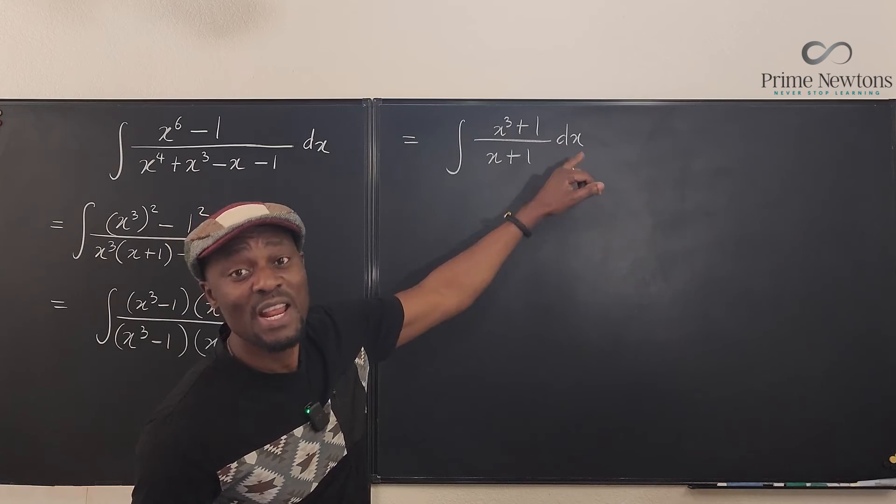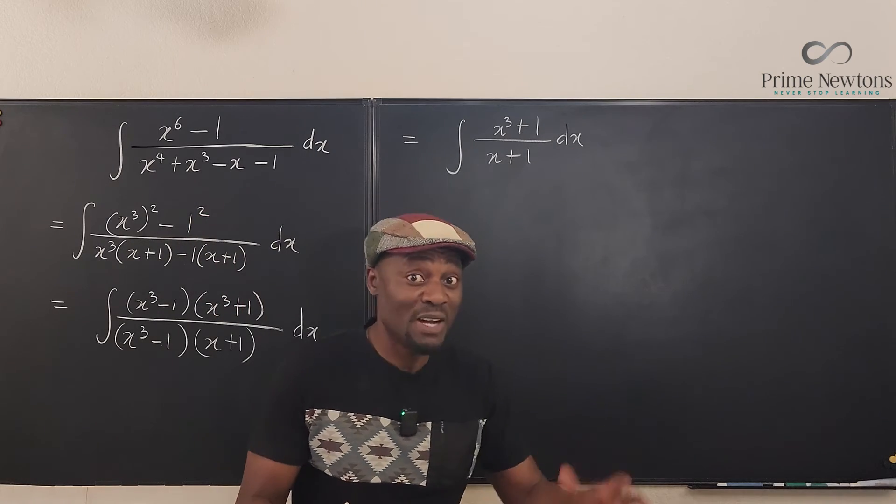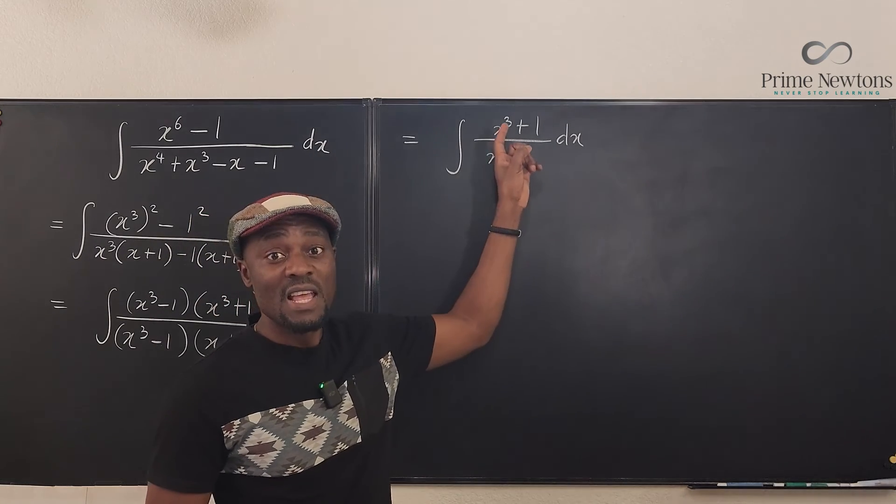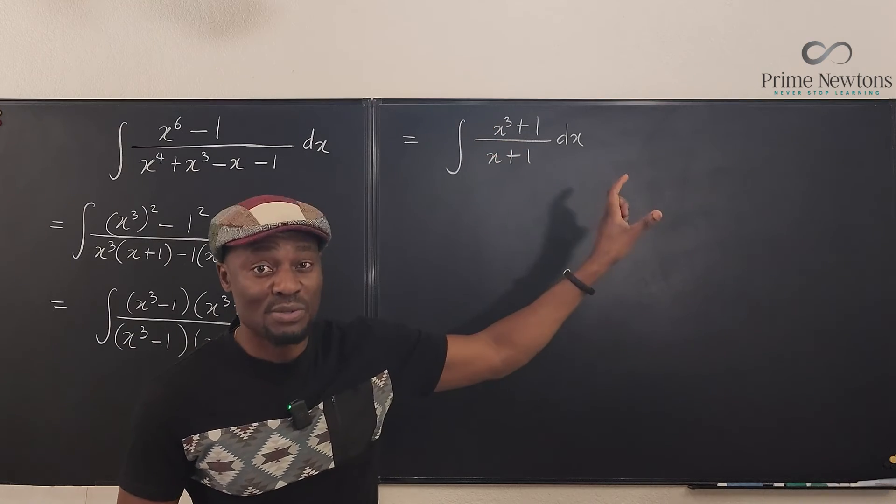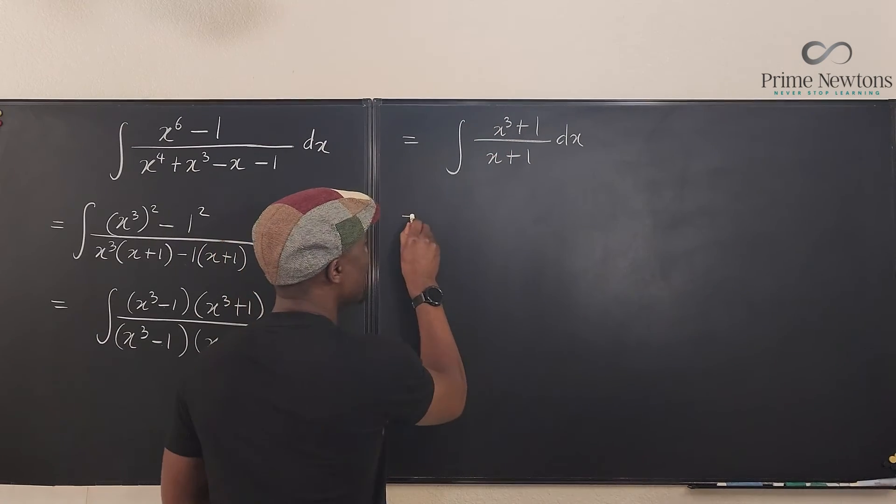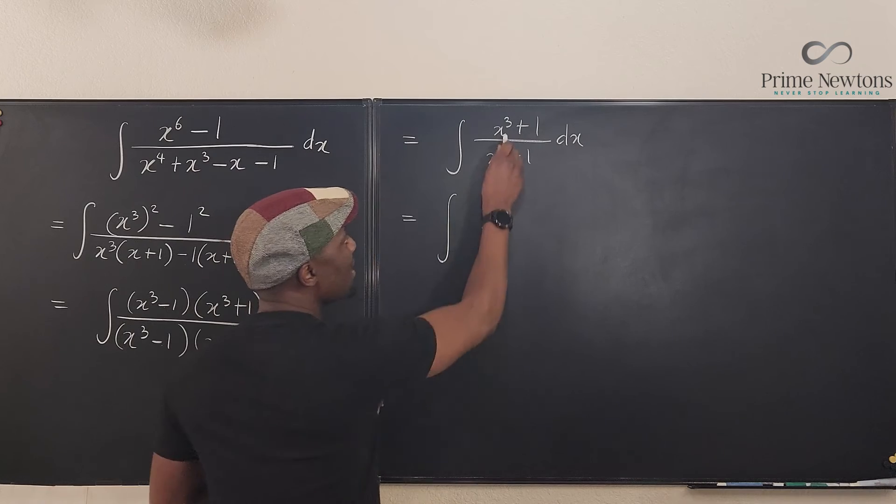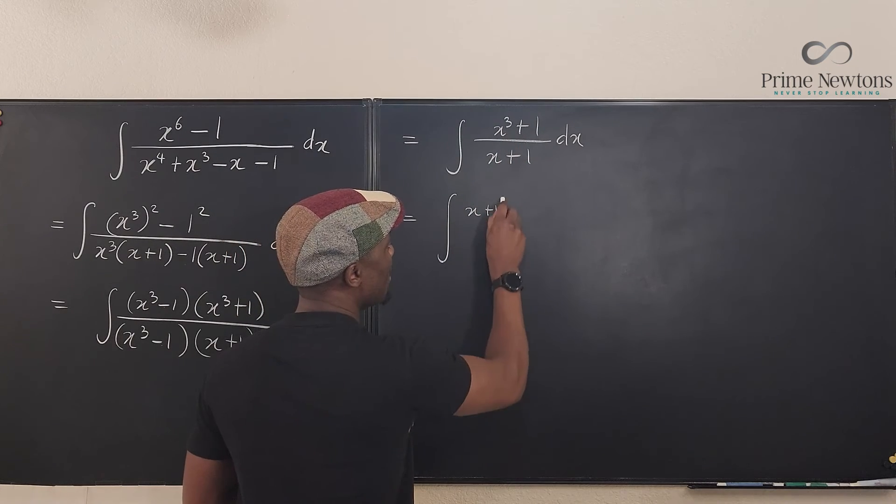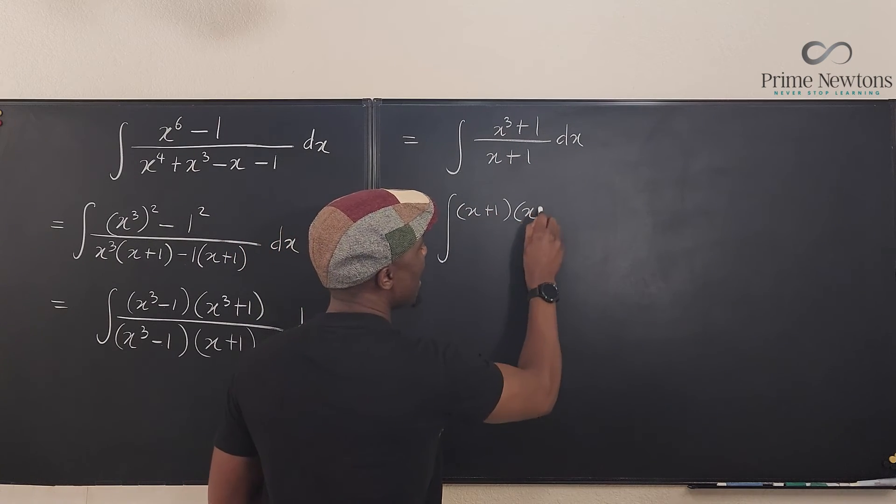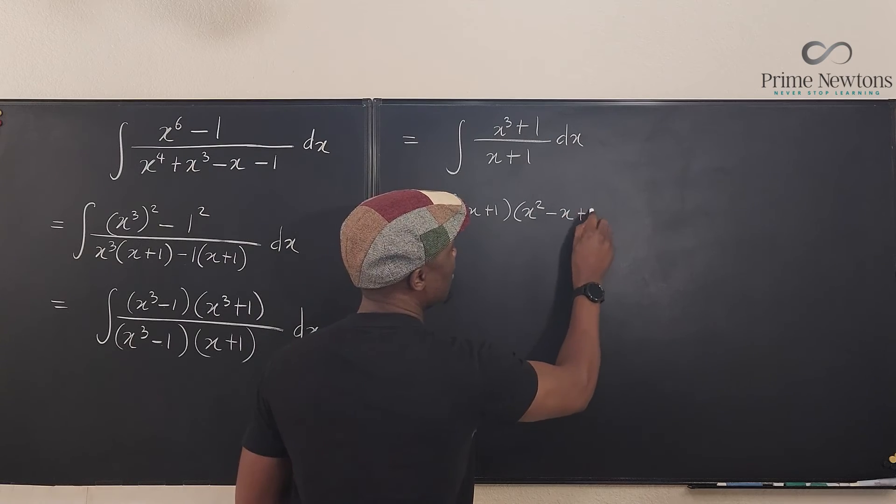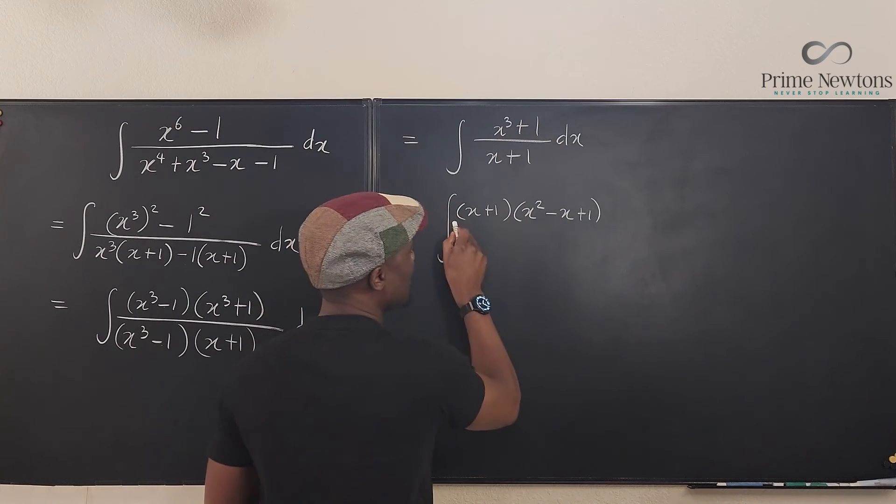I know how to factor x cubed plus one. Now as a calculus student you must know how to factor the sum of two cubes. Okay, so I can write this as the integral of x squared minus x plus one times x squared minus x plus one. This is how to factor this.